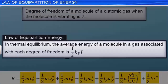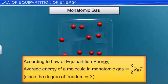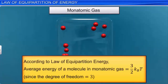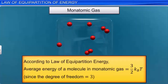The law of equipartition of energy states that in thermal equilibrium, the average energy of a molecule in a gas associated with each degree of freedom is equal to (1/2)k_B·T. According to this law, the average energy of a molecule of a monoatomic gas is equal to (3/2)k_B·T, because the degree of freedom of a molecule in a monoatomic gas is 3.